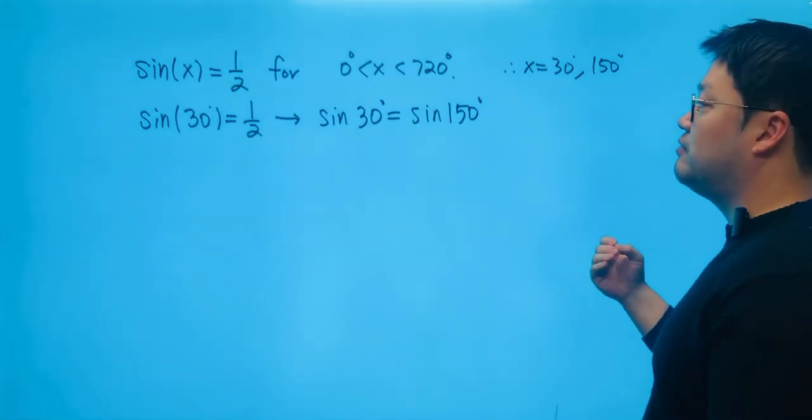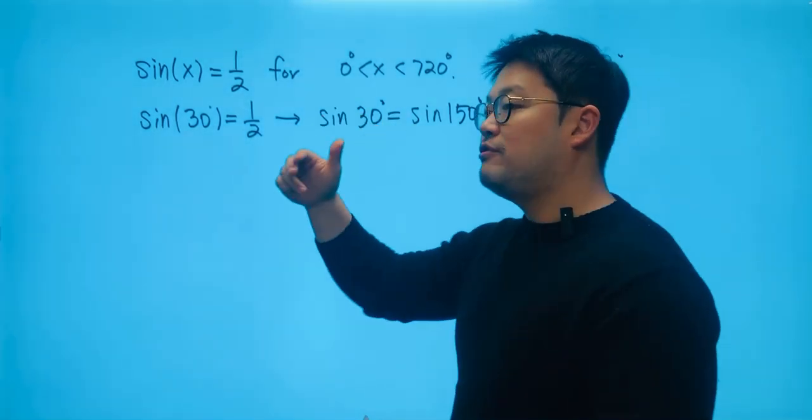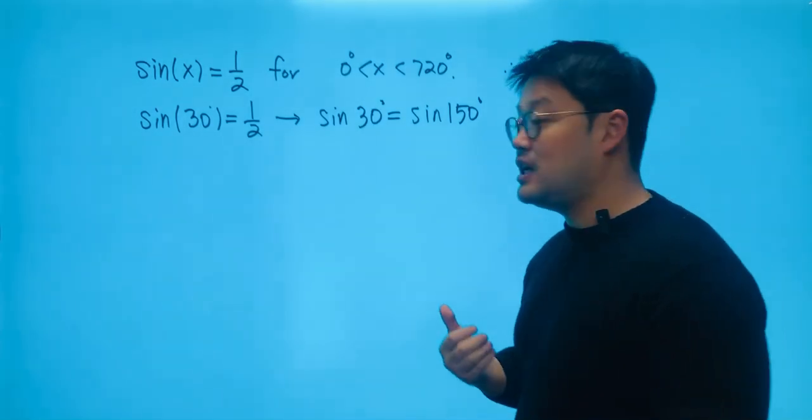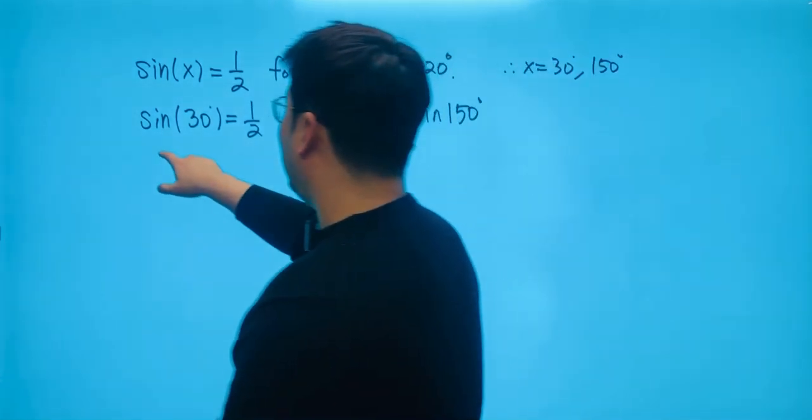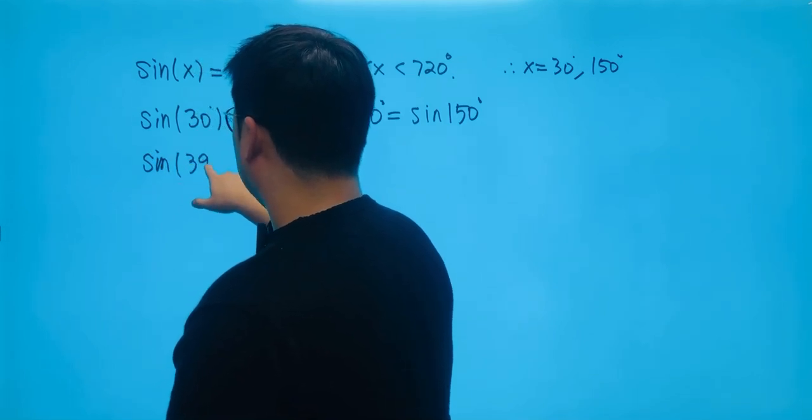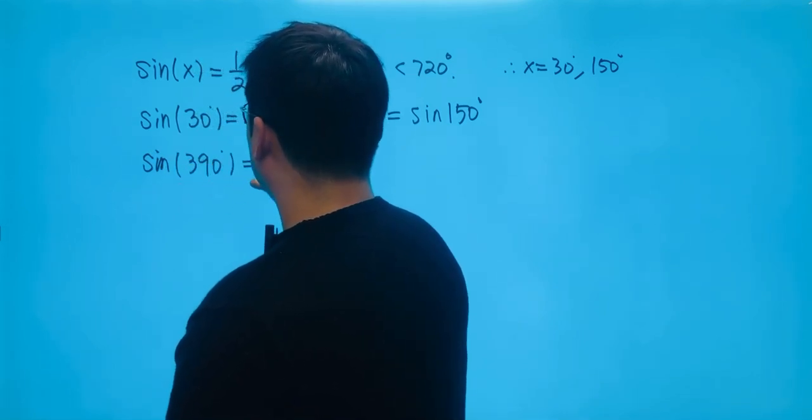But is that the only possible value? I can tell you that after one full rotation, we're going to end up getting the same answer. So in other words, I can actually find out sine 390. Sine 390 is also going to be one-half.